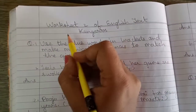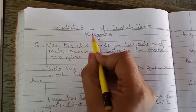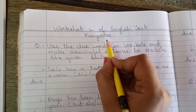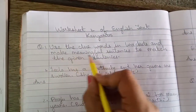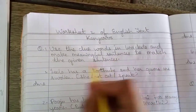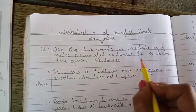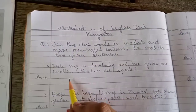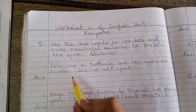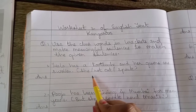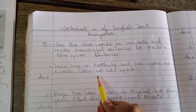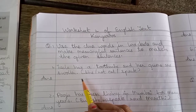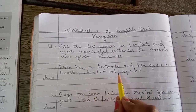Hello students. Today we will solve worksheet number 2 of English text story kangaroos. Question number 1: use the clue words in brackets and make meaningful sentences to match the given sentences. Like worksheet number 1 we have solved, same way in these sentences also, clues are given in brackets. According to those clues we have to write our meaningful sentences.